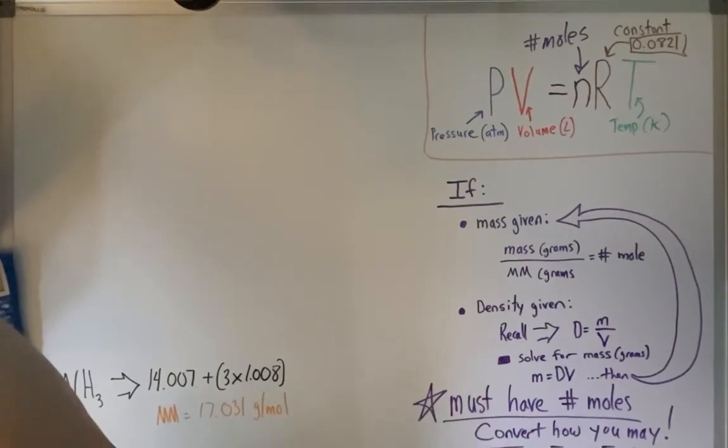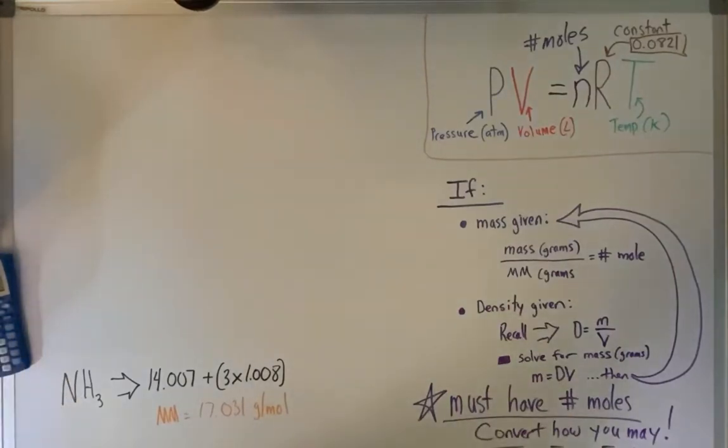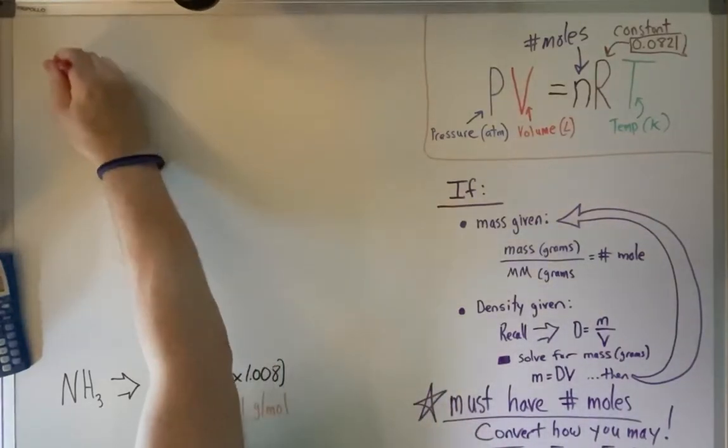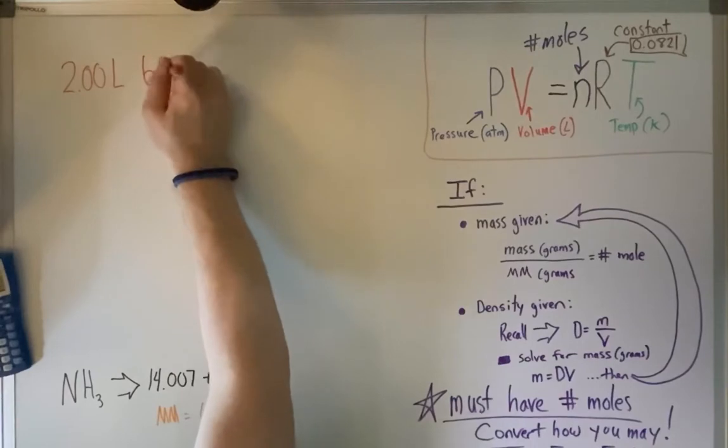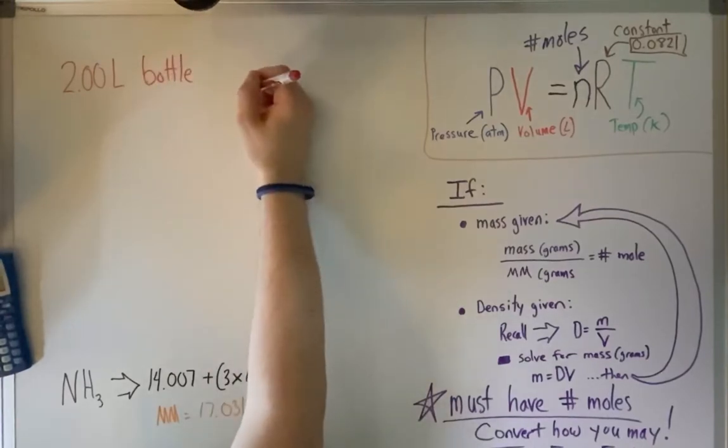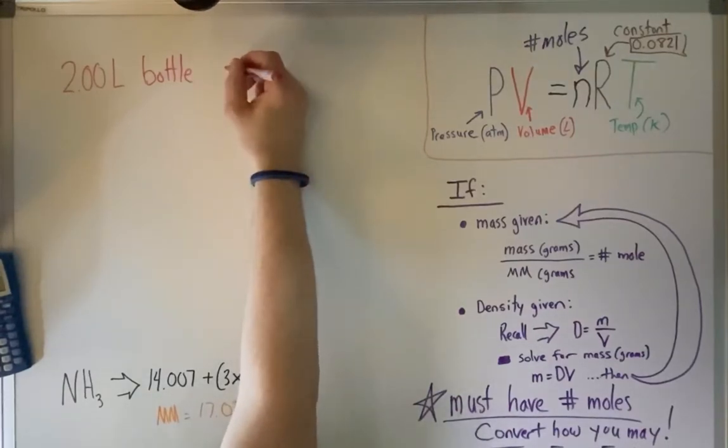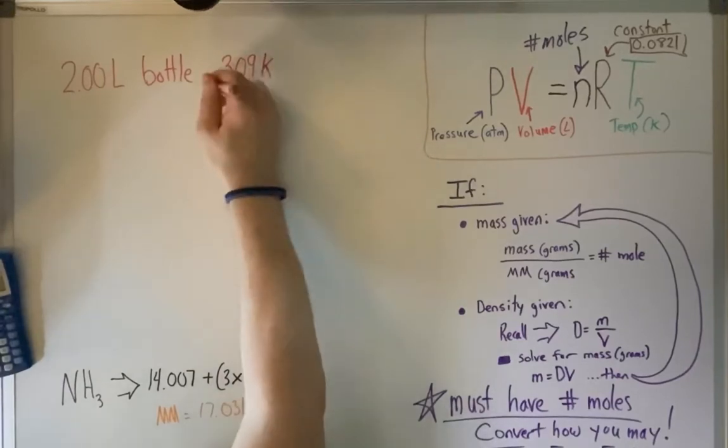Let's see, we have a two liter bottle of soda. We empty the soda out, but we want to fill it for a moment. So if you have a two liter vessel or bottle, let's say we have it at about room temperature, so that would probably be about 309 Kelvin.